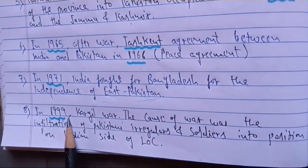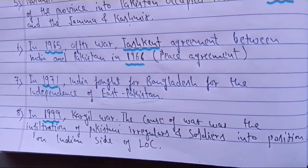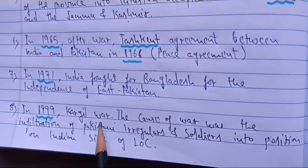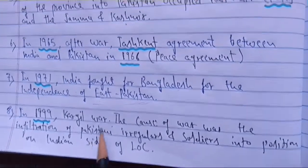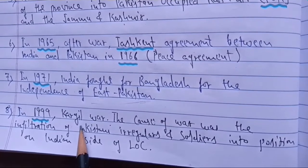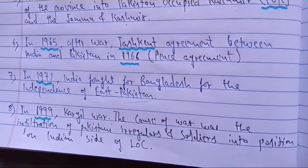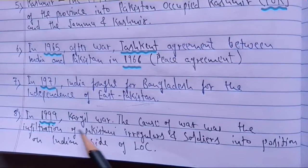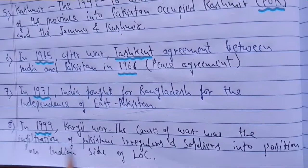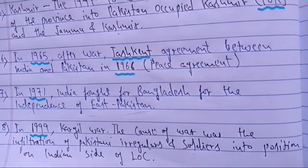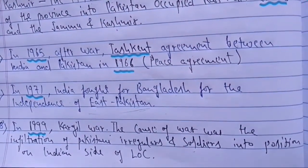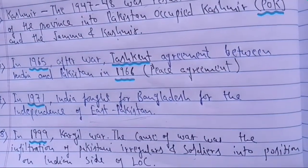The next war was in 1999, called the Kargil War. I showed that area on the map earlier. Again, fighting occurred on the Line of Control (LOC). Pakistan military and militants together crossed the Kargil area, a district of the Kashmir region. The Indian army came into action and Pakistan was defeated. The cause of the war was infiltration — Pakistani irregulars and soldiers both infiltrated Indian boundaries and positions on the Indian side of the LOC.